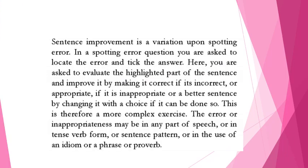Sentence improvement is a variation upon spotting error. In a spotting error question, you are asked to locate the error and take the answer. Here, you are asked to evaluate the highlighted part of the sentence and improve it — by correcting it if it is incorrect, or making it more appropriate. This is a more complex exercise; the error may be in any part of speech, verb form, sentence pattern, or in the use of an idiom, phrase, or proverb.